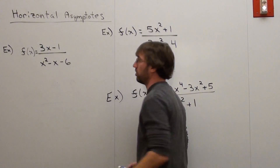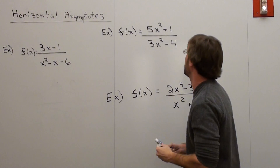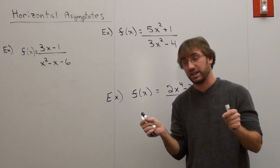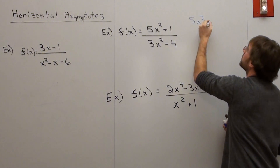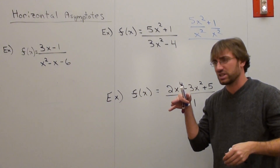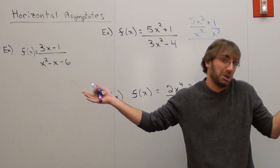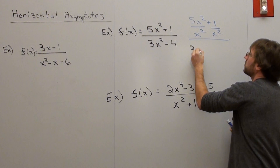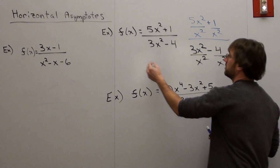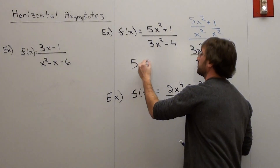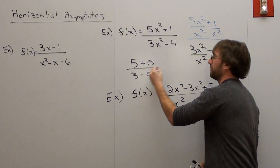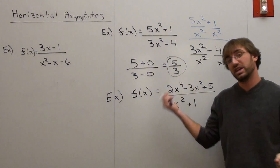Now that brings up a few other questions. What happens when the degrees are the same? What you do is still divide by the highest degree — x squared — dividing each term by x squared. What that does is it allows us to see where the graph is going as we approach infinity or negative infinity. In this case, 5x squared over x squared is 5, and 1 over x squared is 0 as x approaches infinity. 3x squared over x squared is 3, minus 0. So the horizontal asymptote in this case is 5 thirds.